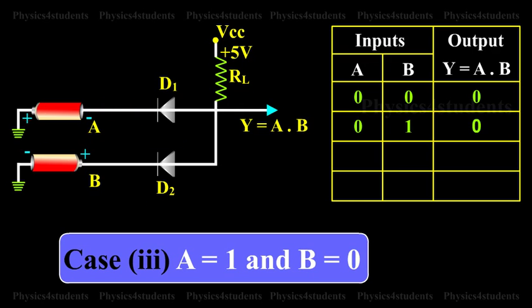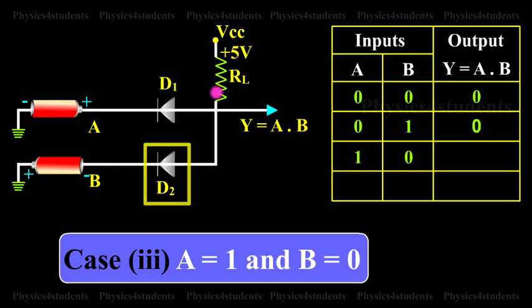Case 3: A is equal to 1 and B is equal to 0. In this case, diode D2 will be conducting and hence the output Y is equal to 0.